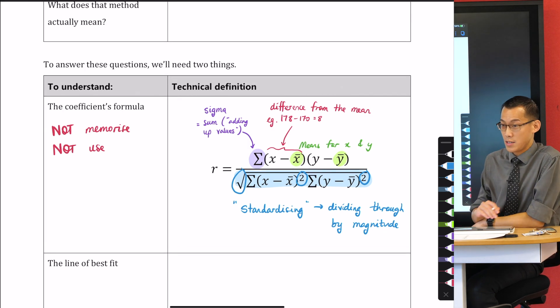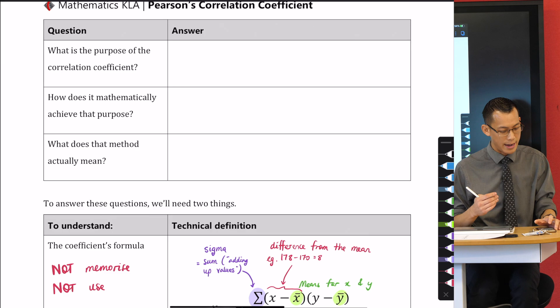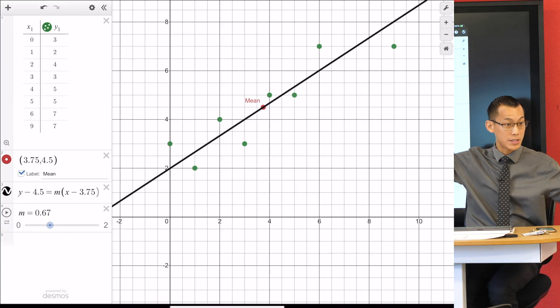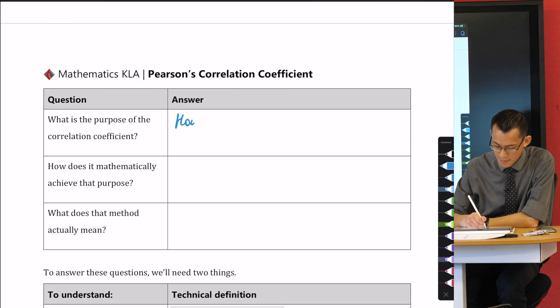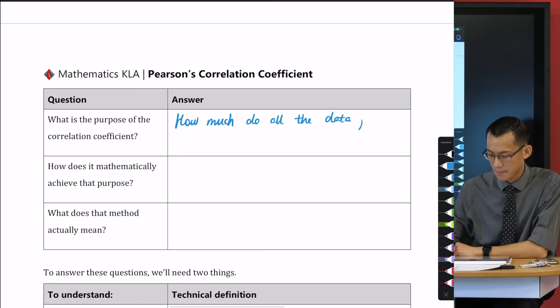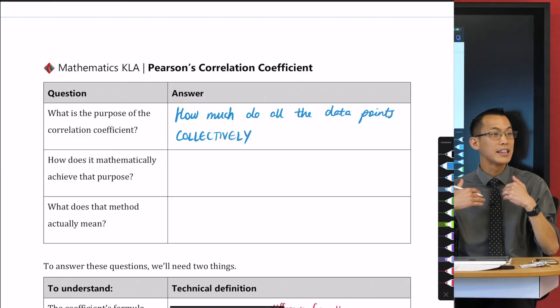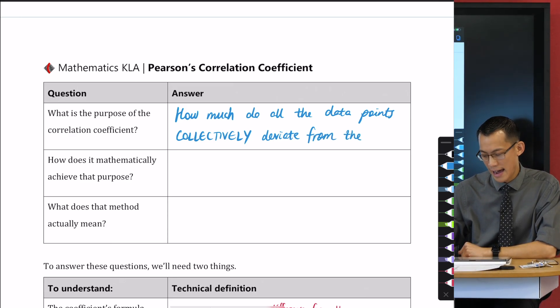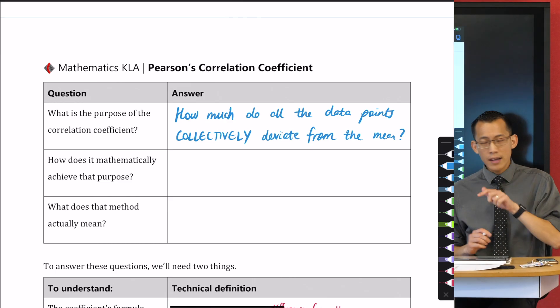So let's go back up to the top because we can answer some of these questions now. This is the correlation coefficient. What is the purpose of the correlation coefficient? What is it trying to do? And the answer is, if we have a look at a data set, it's trying to say how much do all of those data points deviate from the mean? This is about how much do all the data points collectively deviate from the mean? And again, when I say mean, I actually should say means because there's one for x and one for y.